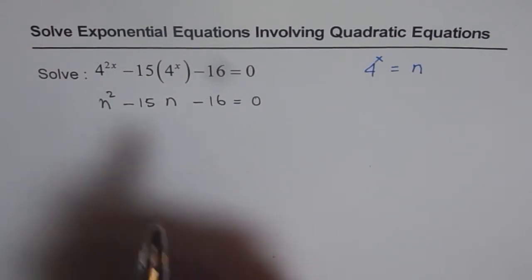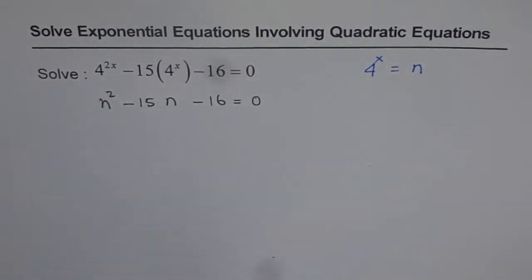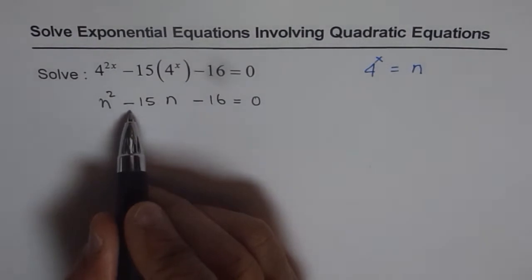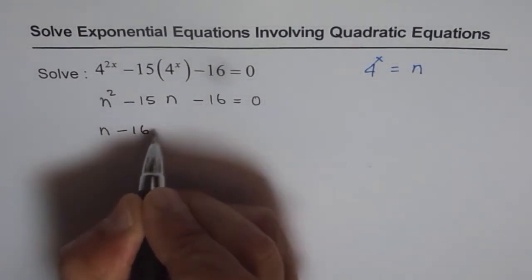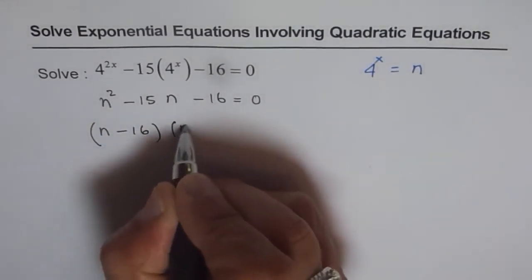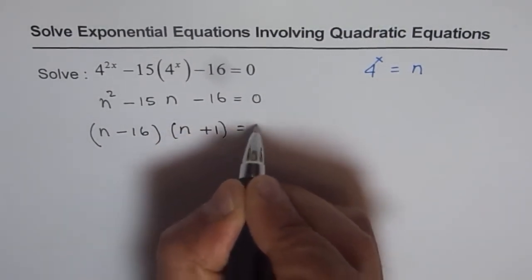Those two numbers could be 16 and 1. The bigger number should be negative. So it is (n - 16)(n + 1) = 0.